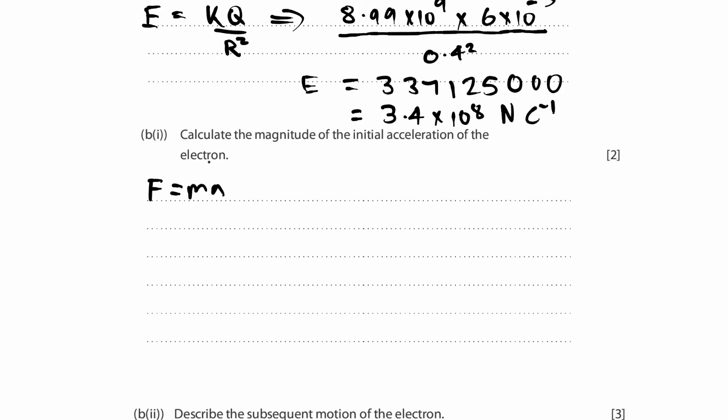Well, we know that force can also be written as kQ1Q2 over R squared. That's in your data booklet. This is the force due to charges. And if we divide this whole expression by the mass, we get acceleration, right? It's simply just substitution right now. We're just manipulating the equations to get it in a form that we can use, and then substituting our known values to get what we need, which is acceleration.